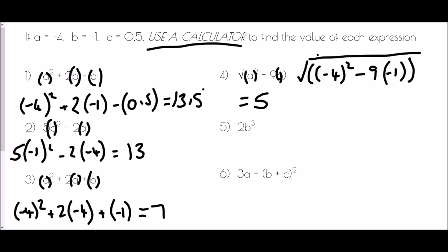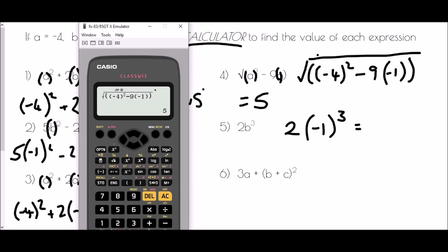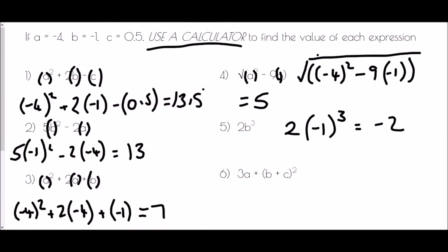For 2b cubed, all I want to do is put a bracket around where b is. So that's 2 bracket negative 1 cubed. Typing into the calculator: 2, bracket, negative 1, to the power of 3, equals — we get negative 2. The reason: negative 1 cubed is negative 1 times negative 1 times negative 1, which is just negative 1.